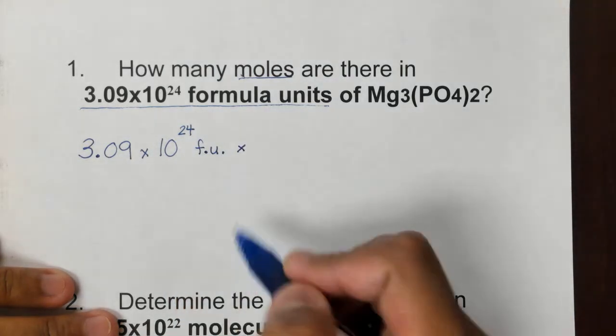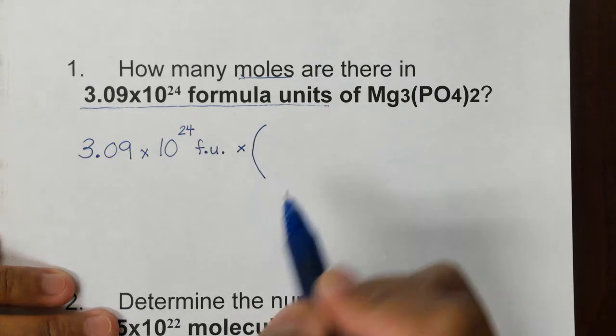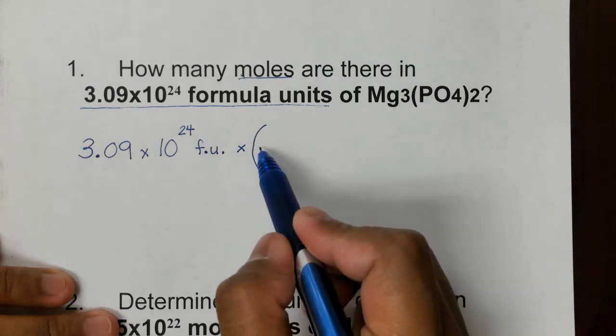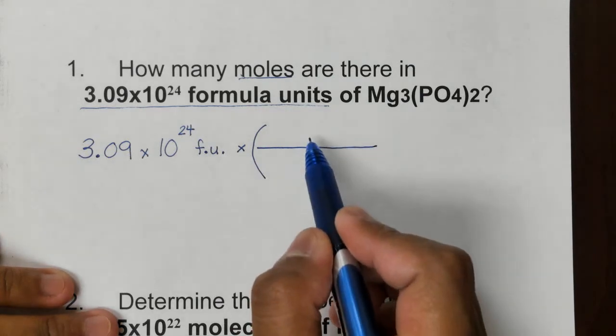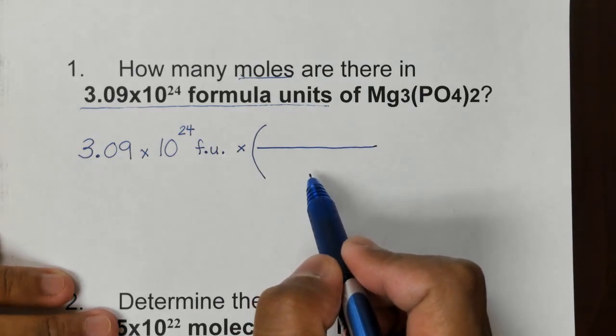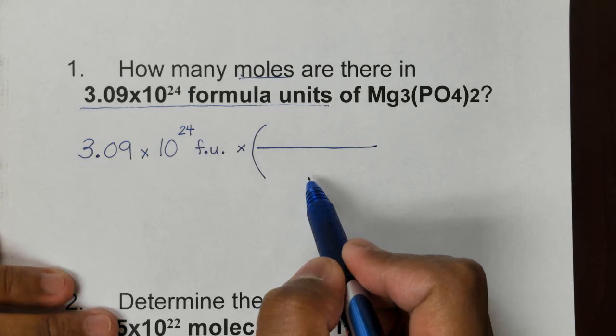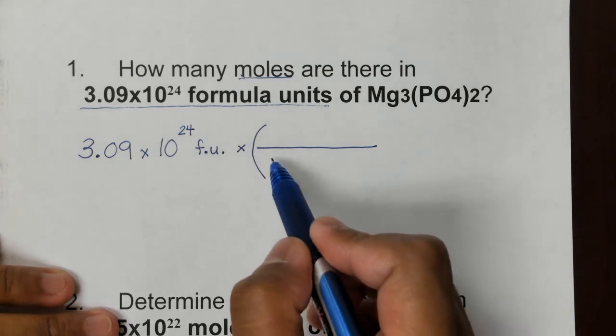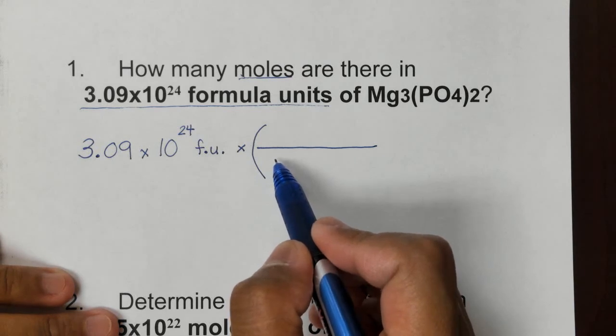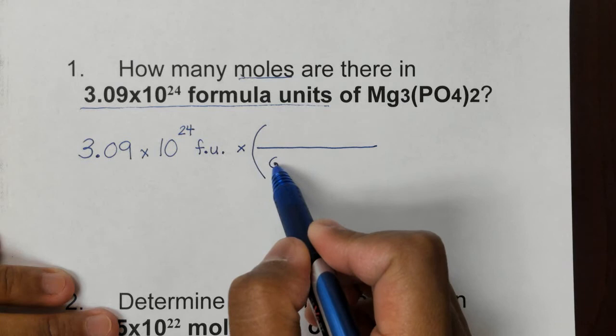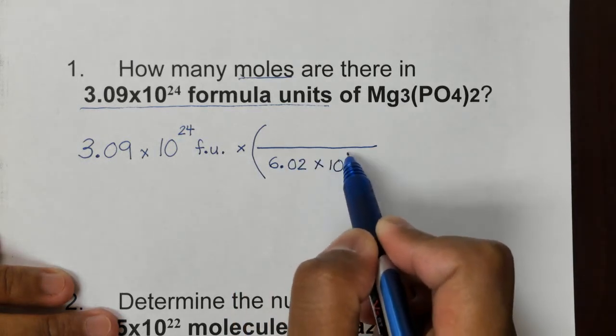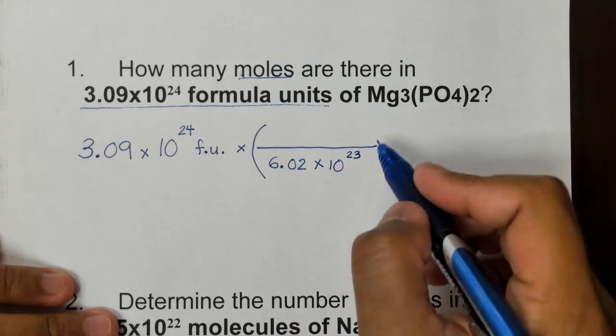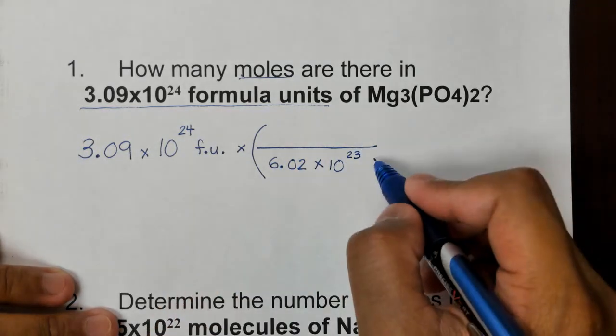So that's our formula units given. After that, by default you always put a multiply there, and then we're going to have a parenthesis to enclose our conversion factor. In the parenthesis we have a divider for the numerator and denominator. Because in the step it says divide, that means we are going to put the Avogadro's number in the denominator. So we're going to put it down here, so that's going to be 6.02 times 10 to the 23.